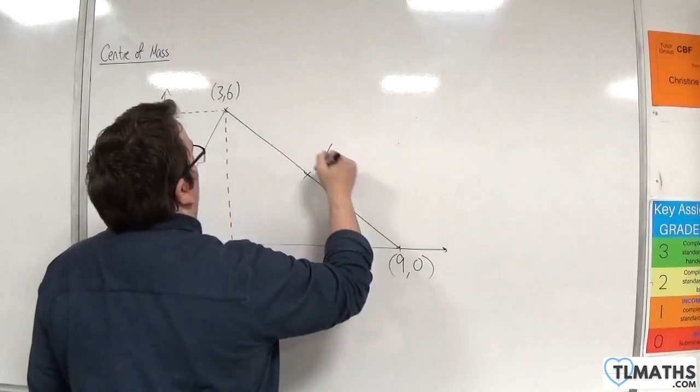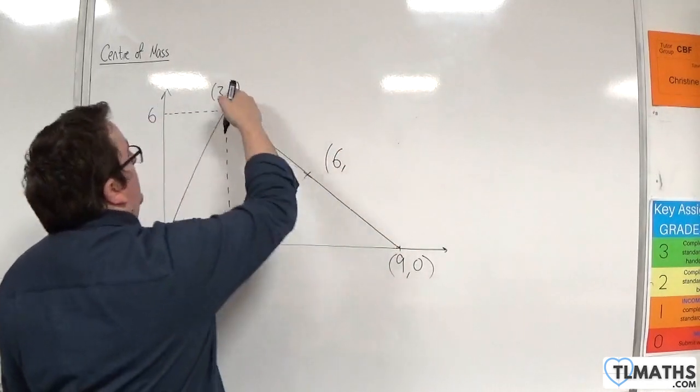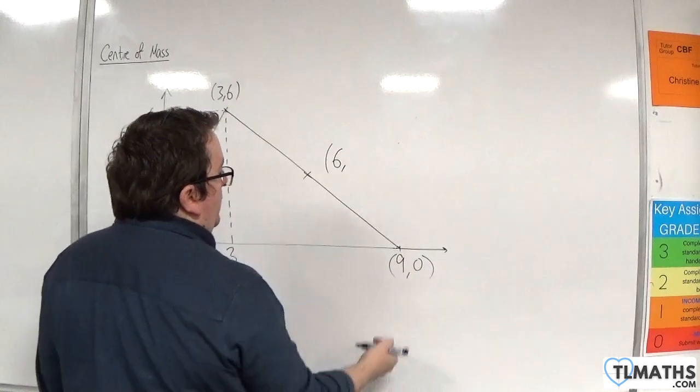So the midpoint will be 3 plus 9 divided by 2, so that'll be 6. 6 plus 0 divided by 2, which will be 3.